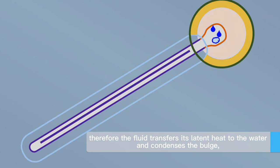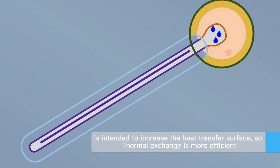Therefore, the fluid transfers its latent heat to the water and condenses. The bulge is intended to increase the heat transfer surface, so thermal exchange is more efficient.